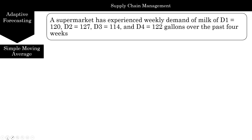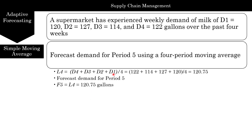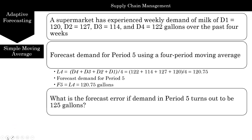Here is an example: a supermarket experienced weekly demand for milk of 120, 127, 114, and 122 gallons over four weeks. Using a four-period moving average, the forecast for period 5 is the average of those four periods: 120.75. Once there is no more demand data — no D5 or D6 — forecasts for F6 or F7 would still remain at 120.75; it doesn't keep updating. If actual demand D5 was 125, the forecasting error is 125 minus 120.75, which is 4.25. Level for period 5 would be the average of D5, D4, D3, and D2, giving 122, and therefore the forecast for period 6 would be 122.